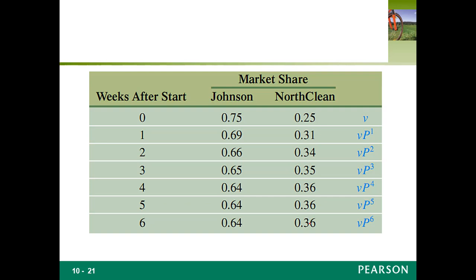In either case, the long-range trend is for the market share of about 64% for Johnson and 36% for Northclean. The example suggests that this long-range trend does not depend on the initial distributions of the market shares — we used two different market shares to begin with and they both tend toward the same results. If the initial market share for Johnson was less than 64%, the advertising campaign has paid off; if more than 64%, it did not pay off.